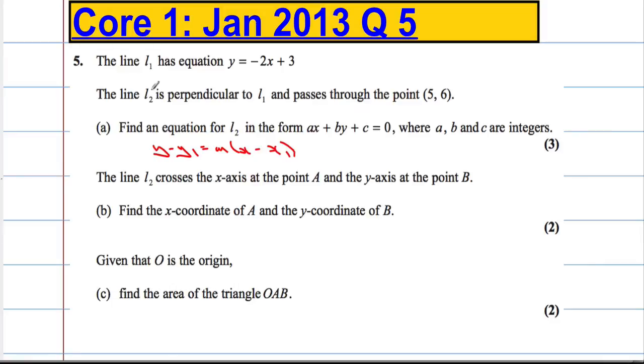Well, we have a point because it tells us that L2 passes through the point (5, 6). And we can work out the gradient because it tells us that it's perpendicular to L1.